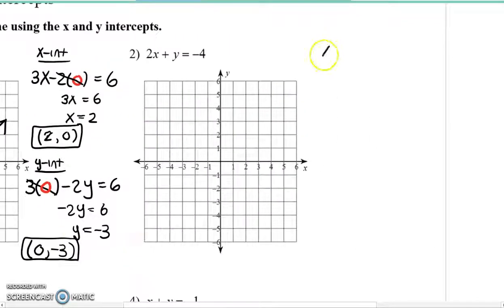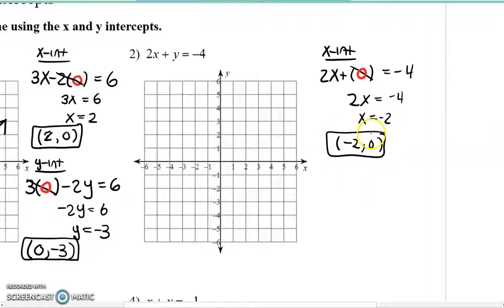Let's move on to number two. So again, x-intercept. We're going to do 2x plus blank equals negative four. Once again, that blank every single time is going to be a zero. We're going to plug in zero for the other variable. That goes away. Divide by two. Therefore, my first point that I'll be plotting in a moment, negative two, zero.